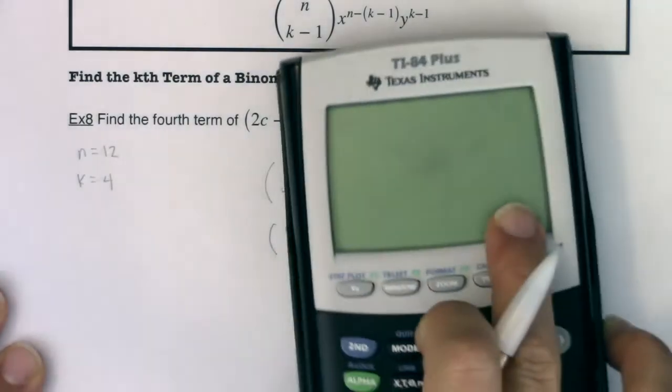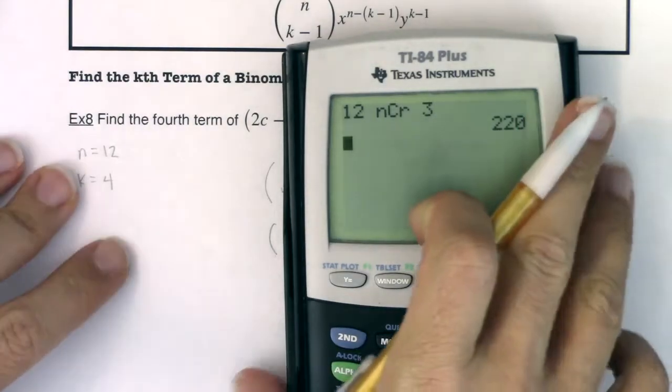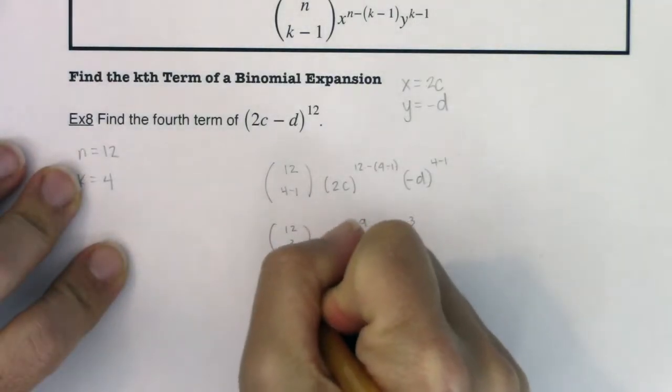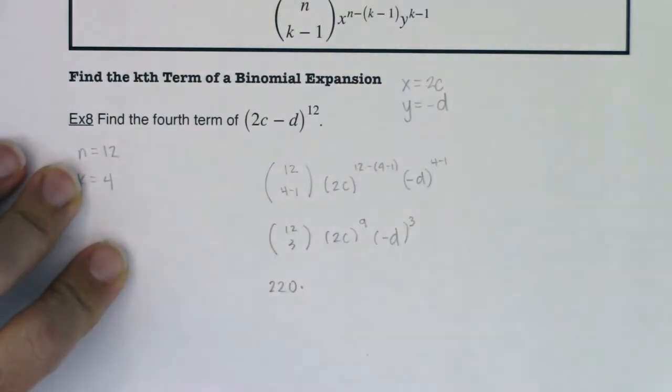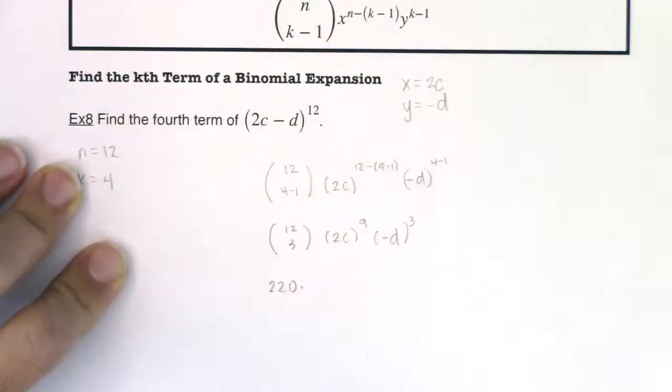All right, let me clear that out. I hit 12 math, PRB option 3, and I want 12 choose 3, so it looks like that's 220. All right, so this is 220. I do need to figure out what 2 to the 9th is. I also don't know that number offhand. 2 to the 9th is 512.